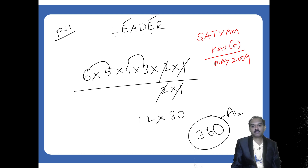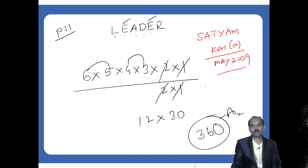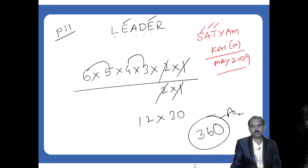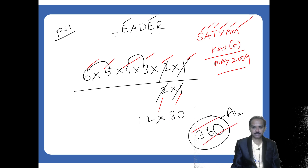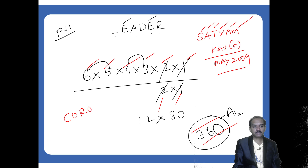So the factorial — LEADER has 6 letters: 6 × 5 × 4 × 3 × 2 × 1. The letter A is repeated two times, so divide by 2 × 1 to cancel them, to get the answer 360.